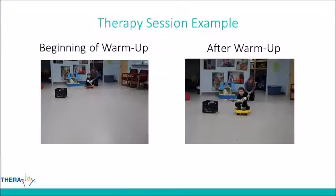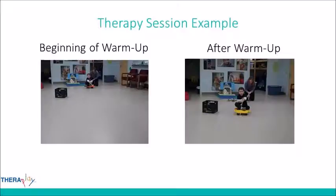For auditory defensive and visual stimming behaviors: for the visual aspect, we work on sensory activities to satisfy that need — instead of stimming on a puzzle piece, we incorporate other sensory input such as movement activities like rolling or back-and-forth swinging, since the visual system is tied to the vestibular. We also work on teaching functional play with those toys behaviorally.